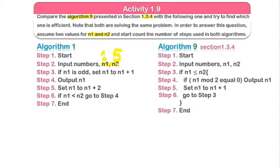Next, you will check: if n1 is odd, set n1 to n1 plus one. The starting number is one, so if number one is odd, you add one — one plus one is two. Then output n1, meaning now you have got the even number two. After this, set n1 to n1 plus two — n1 is now two, plus two equals four. The condition is: if n1 is less than n2, go to step four.